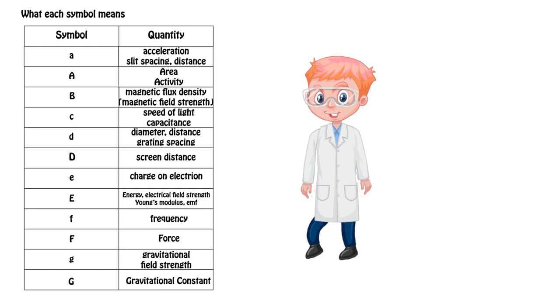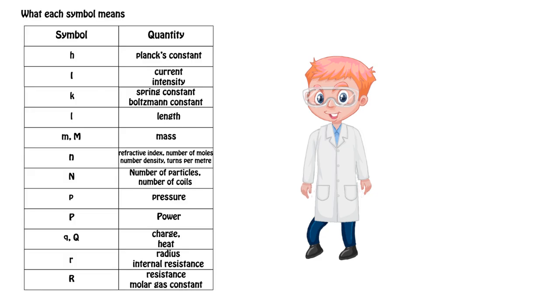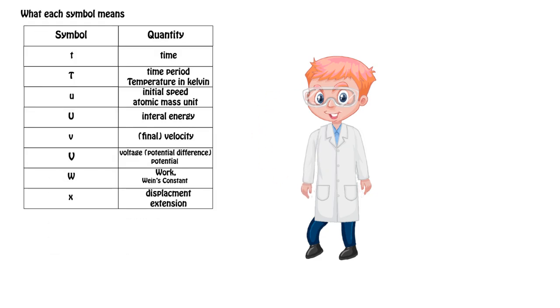The first thing I want to go through is what the different symbols mean. Now quite a lot of them have multiple meanings so it's important we know the context of an equation. I've put them in alphabetical order and then put the Greek letters at the end. So that's A to G and here's H to R and there we have T to X.